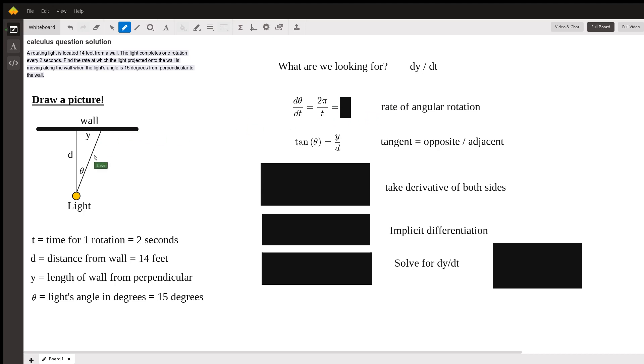The other thing we talked about here is this angular rotation. The light completes one rotation. If we think one rotation in terms of theta, we're thinking two pi in radians for one rotation. So dθ/dt equals 2π over t. When we go back down here we've already defined that as 2 seconds, so 2π divided by 2, that just comes out to be π. We're going to use that later, that's our rate of angular rotation.